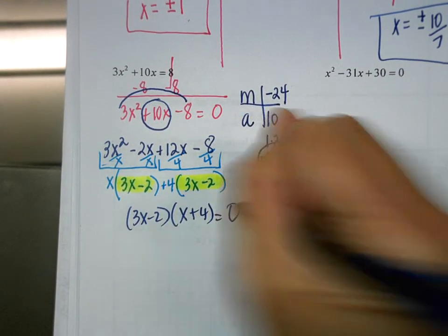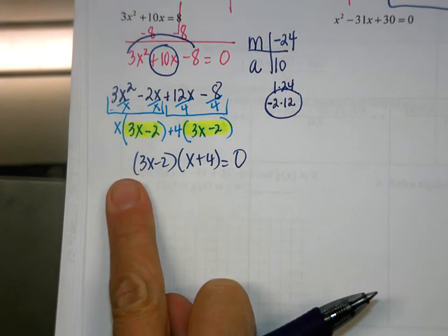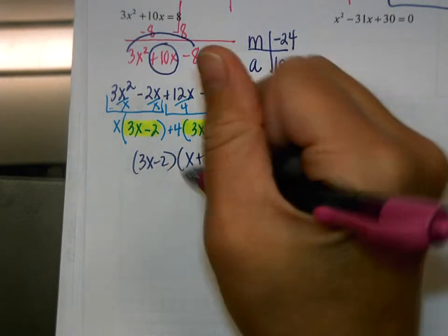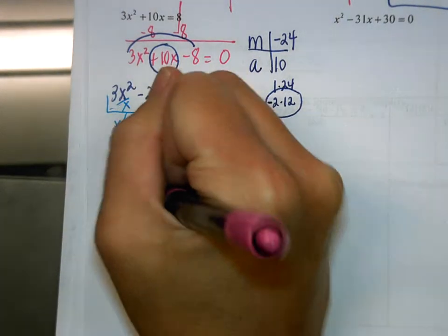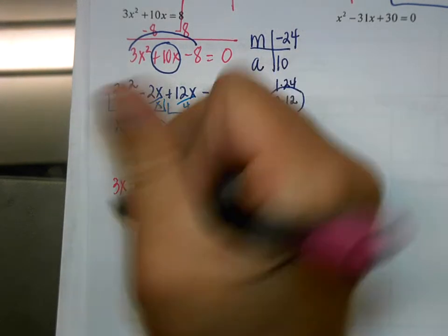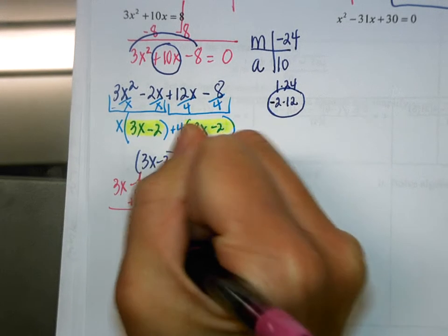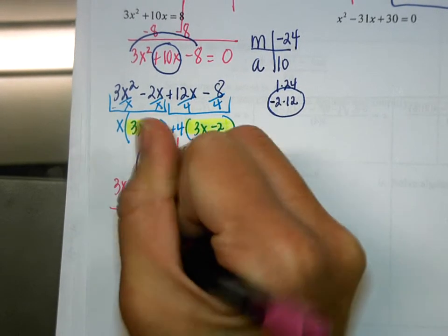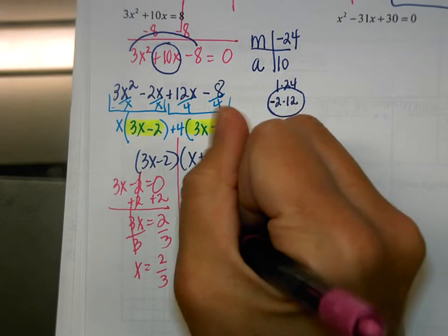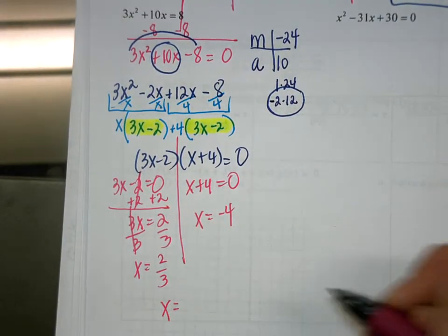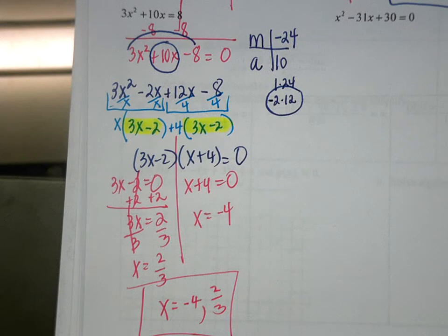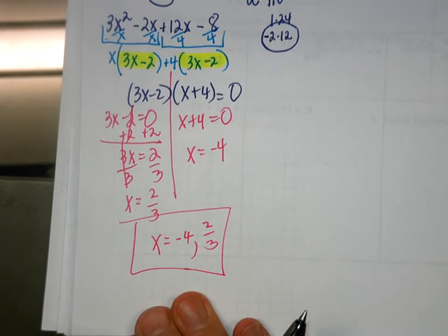Now we're going to set each of our factors equal to 0. 3x minus 2 equals 0: add 2 to both sides, 3x equals 2, divide by 3, so x equals 2 thirds. When I set x plus 4 equal to 0, what does x equal? Negative 4. When you write your answers, you usually write them going from smallest to greatest, so I write this as negative 4 and 2 thirds.